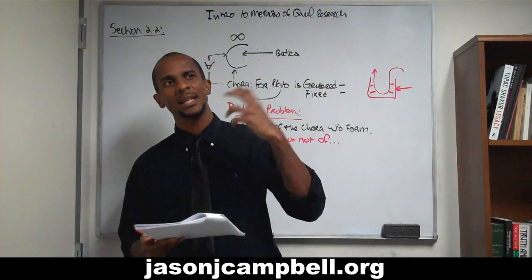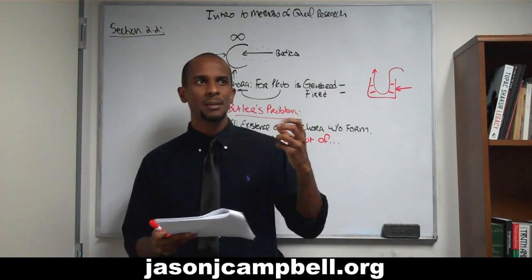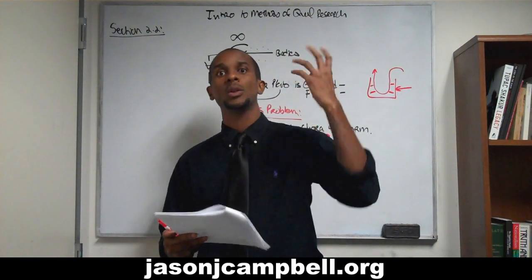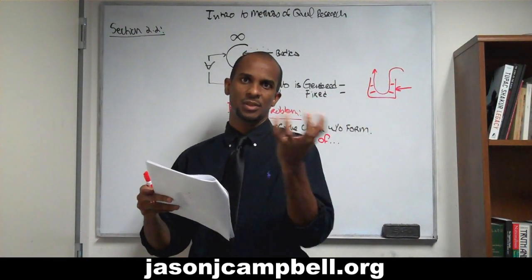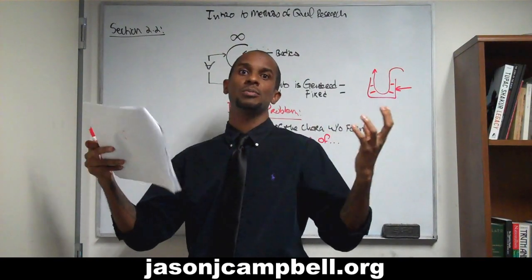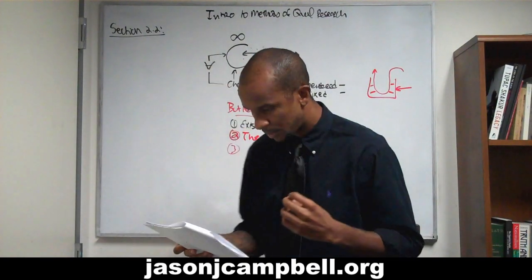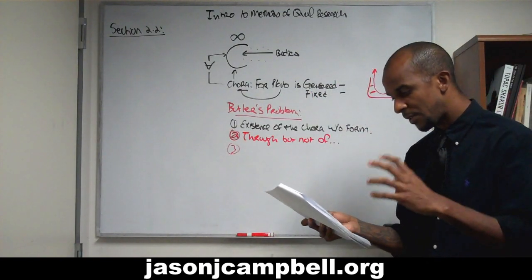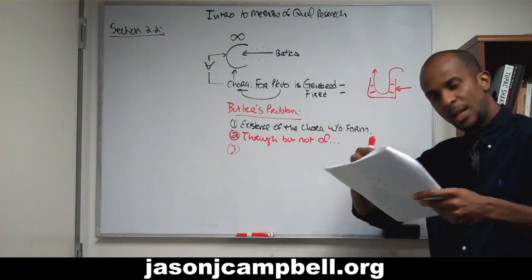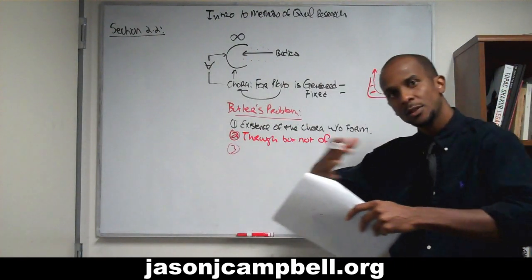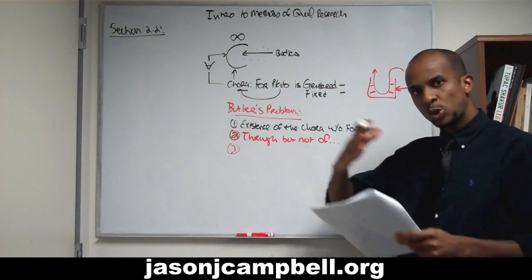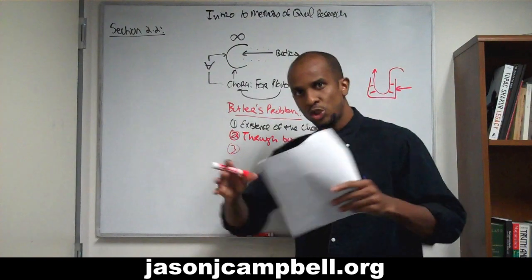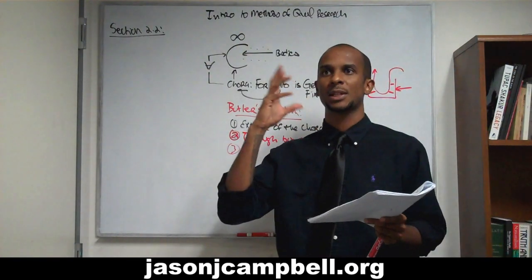Plato: 'Like that of any of the things which enter into her' — this presupposes the chora is not a thing. 'She is the natural recipient of all impressions, and is stirred and informed by them.' She is the natural recipient of all impressions — everything impresses itself on her. This is universal passivity. It's actually very interesting that Plato was able to conceive this independent of physics or anatomical biology. It's very abstract and ethereal, but it's scary how much this really does apply to many, many things.